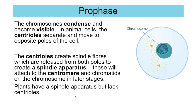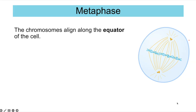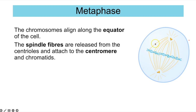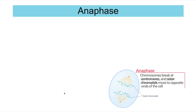In metaphase, the chromosomes line up in single file at the equator of the cell — the middle of the cell, like the equator of the Earth. The spindle fibres released from the centrioles attach to the centromere and some of the chromatids on those chromosomes, helping them align at the equator. The spindle assembly checkpoint also occurs at this stage — a check to ensure every chromosome has attached to a spindle fibre before mitosis can proceed to anaphase.